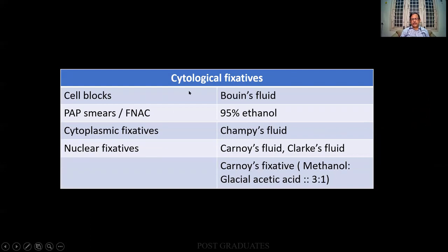Cytological fixatives — this kind of classification is given in Culling. Chemical classification and cytoplastic fixatives, cytological fixatives are given in Culling. Cytological fixatives are usually used where the cells will have to be present. Obviously there is a cell block — you centrifugate and then you get a clump of cells fixed in Bouin's fluid. For Pap smears: ethanol, cytoplastic fixatives, Champy's fluid, nuclear fixatives, Susa fluid, Flux fluid, etc. Try to know at least these particular lists for the interest of it. If you want to challenge your friends, you can ask what is Champy's fluid.